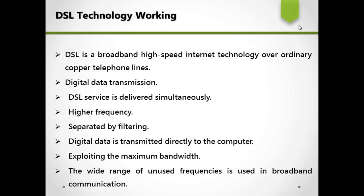Let's see how DSL technology works. DSL is a broadband, high-speed internet technology over ordinary copper telephone lines. Digital data transmission is possible, and DSL service is delivered simultaneously. Higher frequencies are used for data, and these are separated by filtering using a low pass filter and a high pass filter — low pass signals are used for voice signals, and high frequency signals are used for data. The digital data is then transmitted directly to the computer, exploiting the maximum bandwidth through DSL technology, using a wide range of unused frequencies in broadband communication.